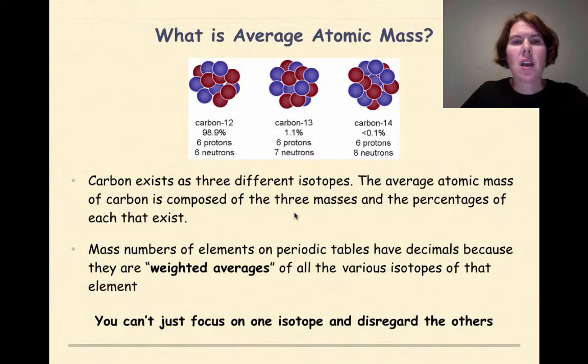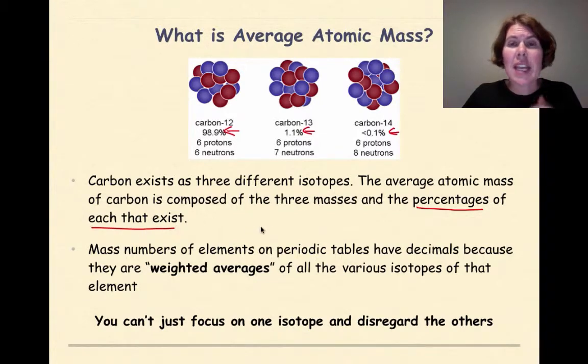So what is average atomic mass? Here's our little diagram that we had in the previous slide, and we're going to focus on the fact that this carbon exists not as just one mass, but actually of three different isotopes, and each isotope has a certain mass that's associated with it. So when we find average atomic mass, it's going to be associated with those three masses and the percentages of each of those isotopes that exist.